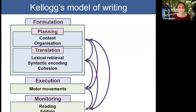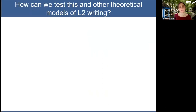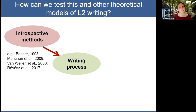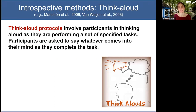This cognitive model describes writing as an interactive and recursive process — these processes are assumed to happen in parallel. To test this and other models of second language writing, researchers have mostly relied on introspective protocols such as the think-aloud and stimulated recall procedure.